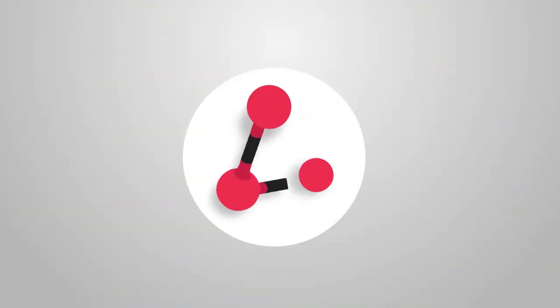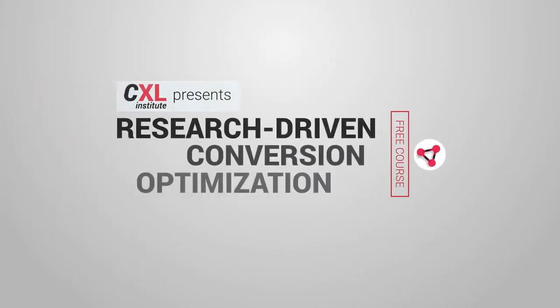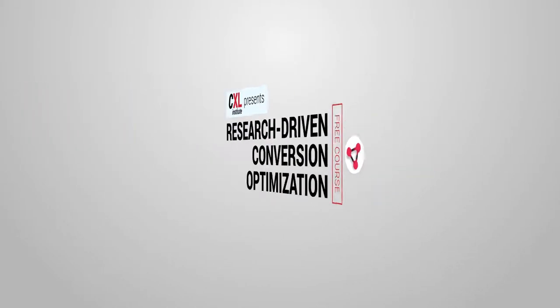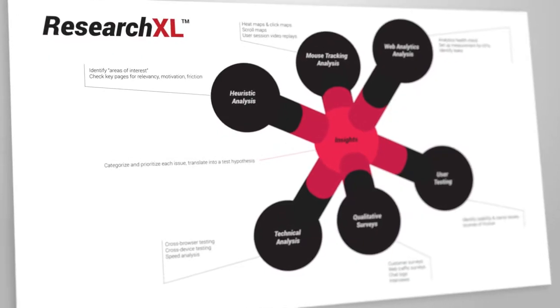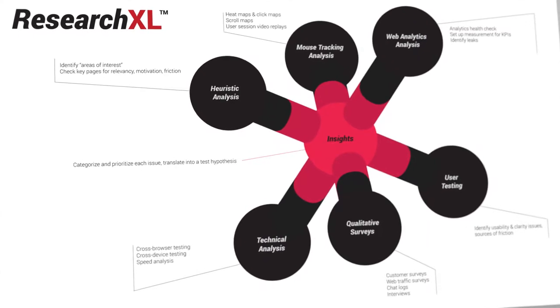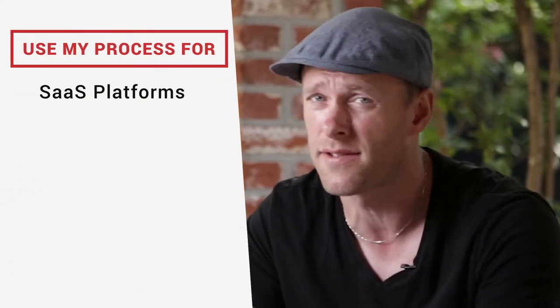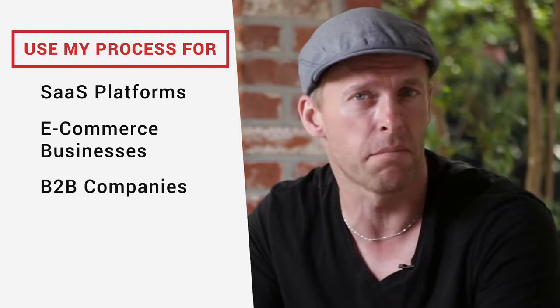Have you been getting inconsistent results from conversion optimization or A/B testing? Or maybe no results at all? It's probably because you're doing it wrong. Maybe you're copying random tactics from a blog post, copying competitors or market leaders, or just following best practices. That's not how you optimize a website. There is a process, a framework for conversion optimization that is industry-agnostic — it works for SaaS, e-commerce, B2B, media, across the board — and gets you insane results. I'm going to teach it to you.